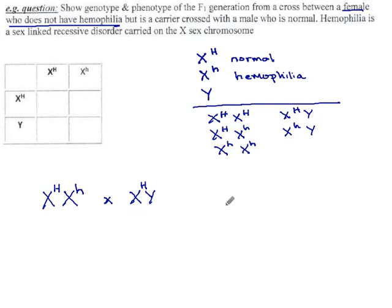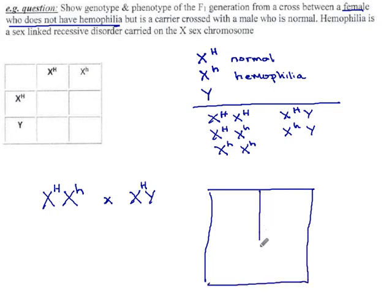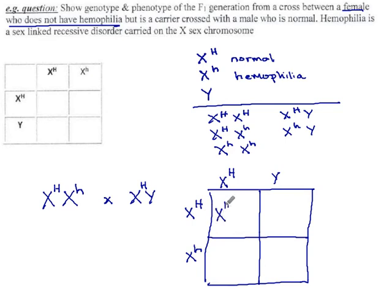So if we cross these two, a Punnett square occurs. Here's mom: X-big-H and X-little-h. Dad is X-big-H / Y. And so we get X-big-H / X-big-H, X-big-H / Y, X-big-H / X-little-h, and X-little-h / Y.